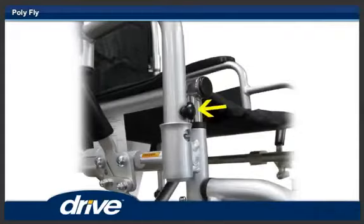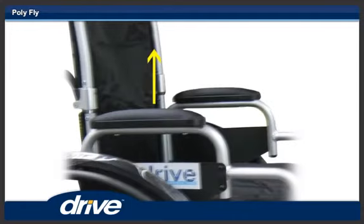Step 14. To remove the armrest, depress the arm release button and pull the armrest straight up.